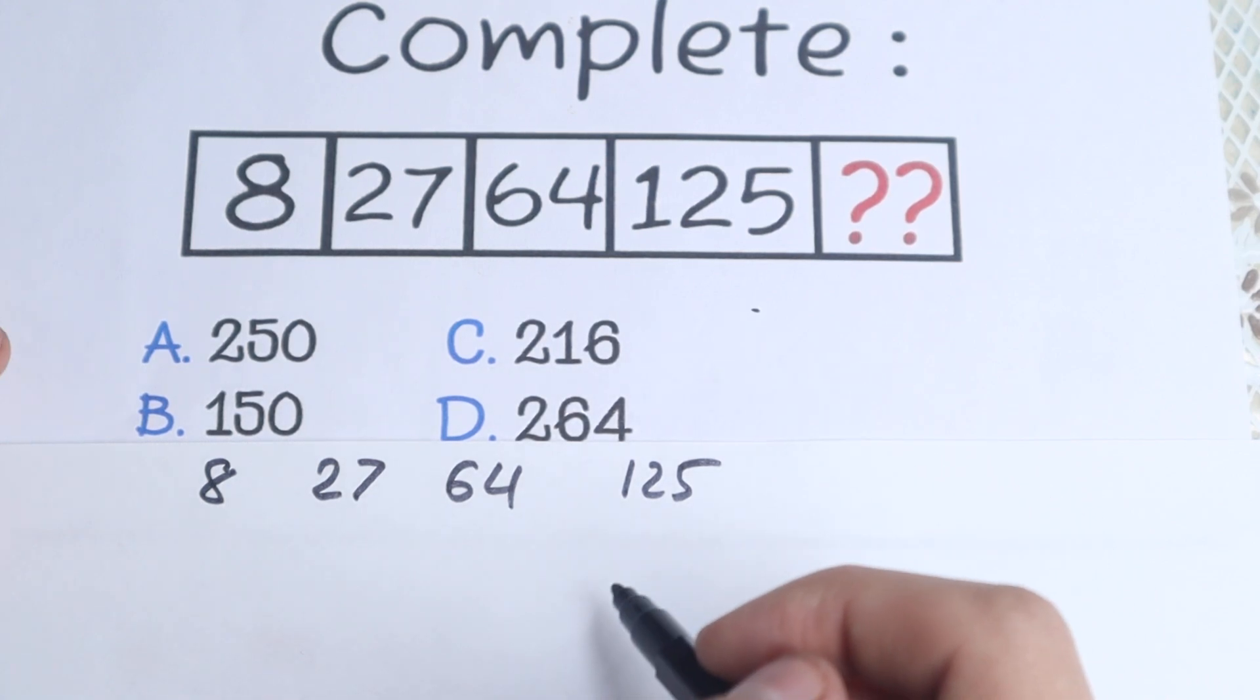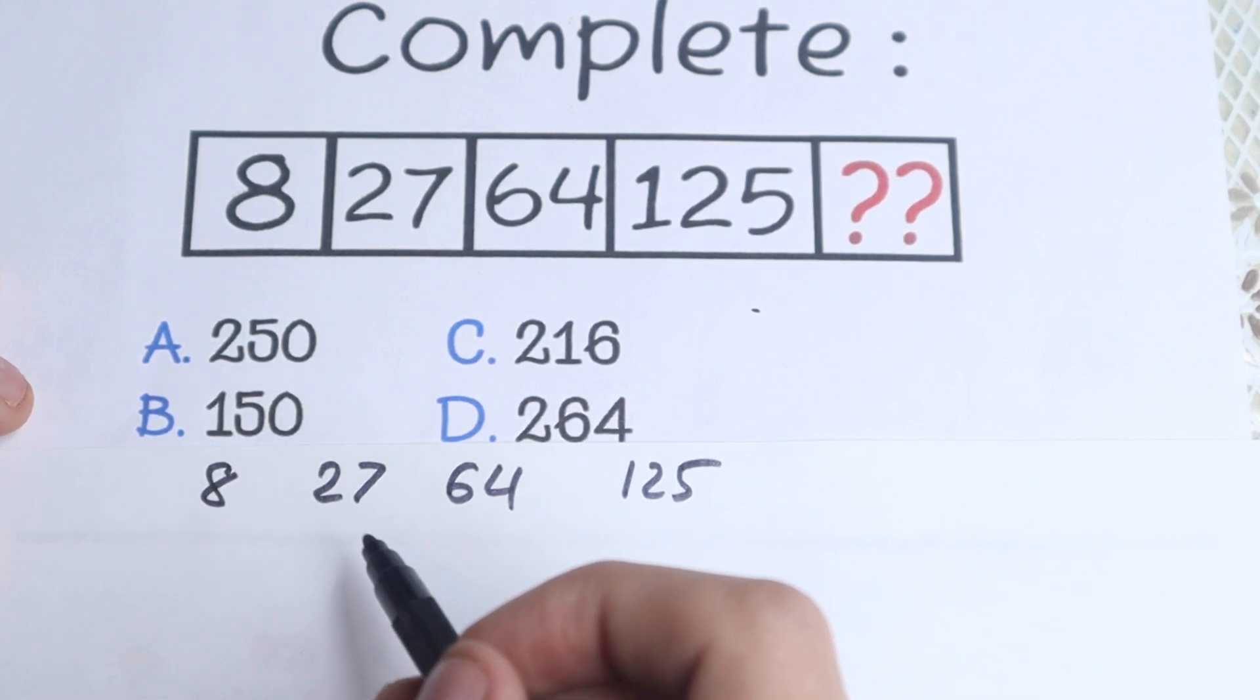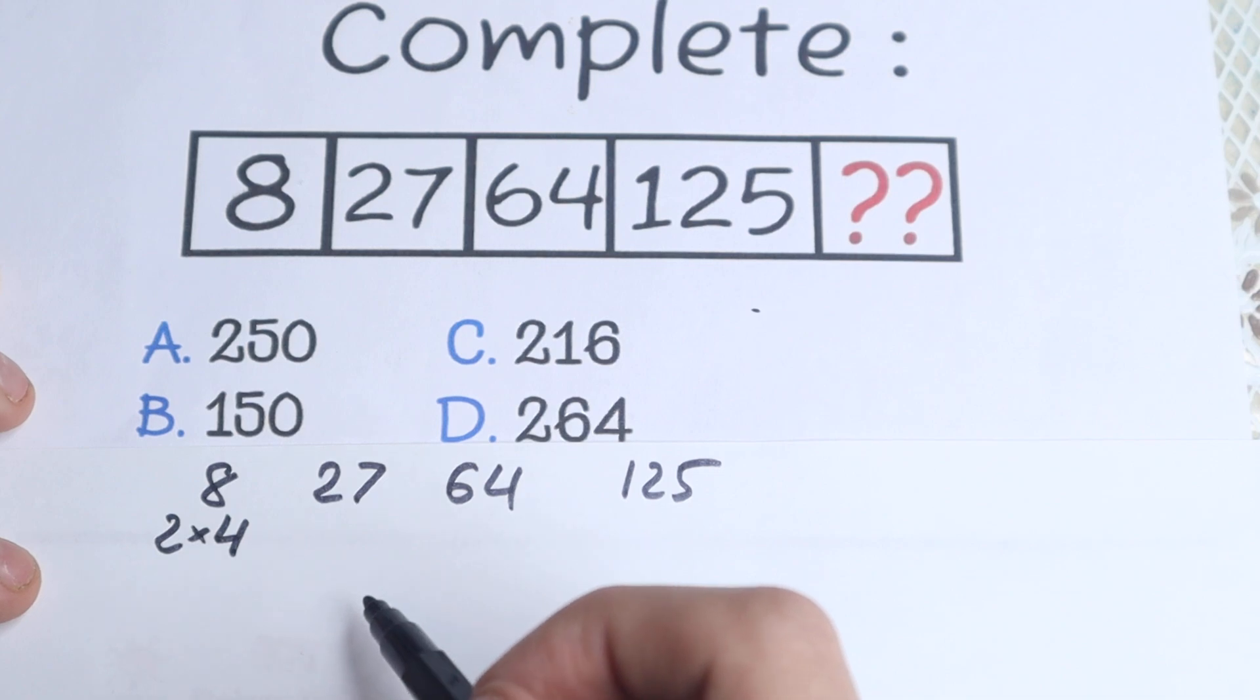But if we look closely to these numbers, we have our 8. What about this 8? Right here I write this 8 as a product, because we all know that 8 can be written as 2 times 4. And this 27 as a product, of course, as 3 times 9.